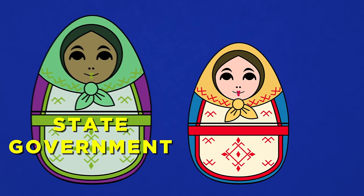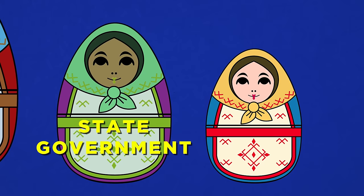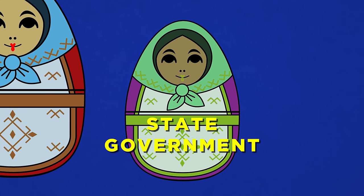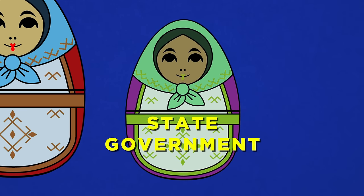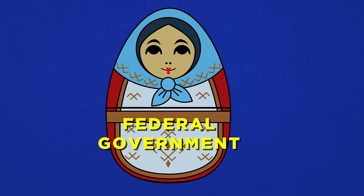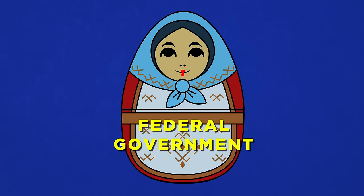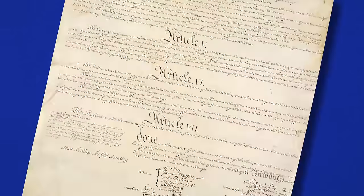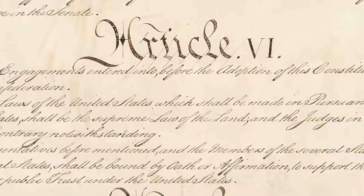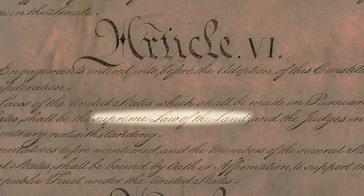The state government doll covers all of the counties, cities, and people in the state. A law passed at a state level cannot be overridden by a local government. Finally, you have the largest doll, the federal government. The federal government reigns supreme — literally. Article 6, clause 2 of the U.S. Constitution is the Supremacy Clause, which establishes that federal laws are the supreme law of the land.